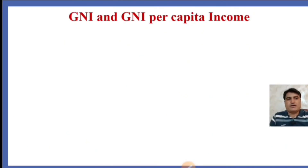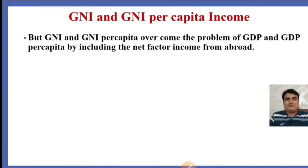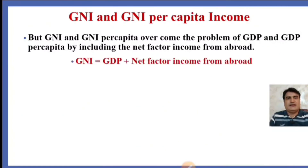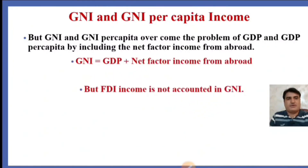Another measure for growth is gross national income and gross national income per capita. GNI and GNI per capita overcome the problem of GDP and GDP per capita by including the net factor income from abroad. GNI is equal to GDP plus net factor income from abroad. However, FDI income is not accounted for in GNI, and this is the drawback of the gross national income method.